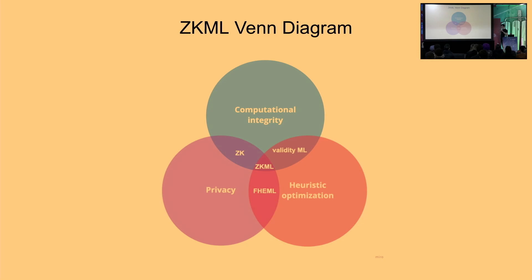I'll talk about different primitives and how you can combine them to give zero-knowledge machine learning a good intuition for what we're trying to do. On the left side we have privacy and computational integrity — if you combine these properties, you get zero-knowledge cryptography. If you combine privacy and heuristic optimization — which you can think of as an algorithm that gives a good enough approximation to a problem — in the context of ML, for example, a model that classifies an image as a dog or a cat.